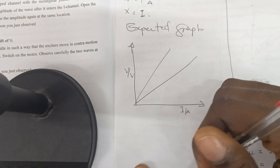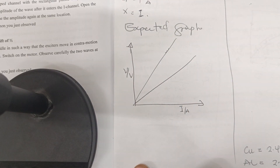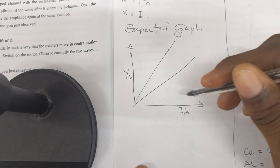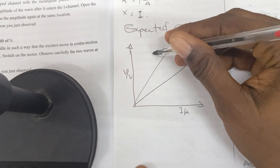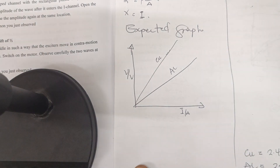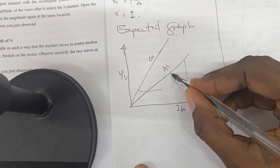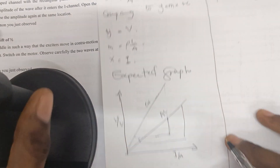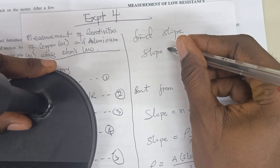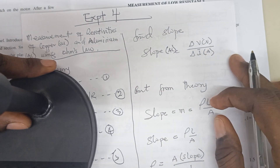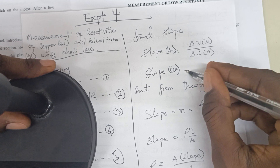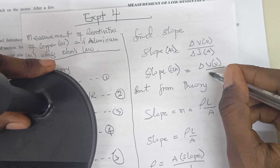We are expected to get a graph with two lines, one for copper and one for aluminium, both passing through the origin. After drawing the graph, we find the slope for each line. The slope for aluminium is the change in V over the change in I, and we also find a separate slope for copper — again the change in V over the change in I.